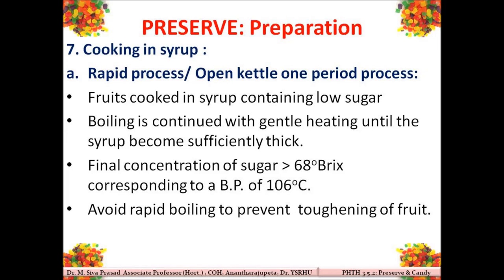The prepared fruits and sugar syrup are mixed and cooked together. For cooking this mixture, there are three types of methods: a rapid process, a slow process, and a vacuum method. These vary in the rate of cooking and the quality of preserve produced. The end point is judged by attaining 68 degrees Brix and above — or when the boiling point of the sugar syrup reaches 106 degrees Celsius.